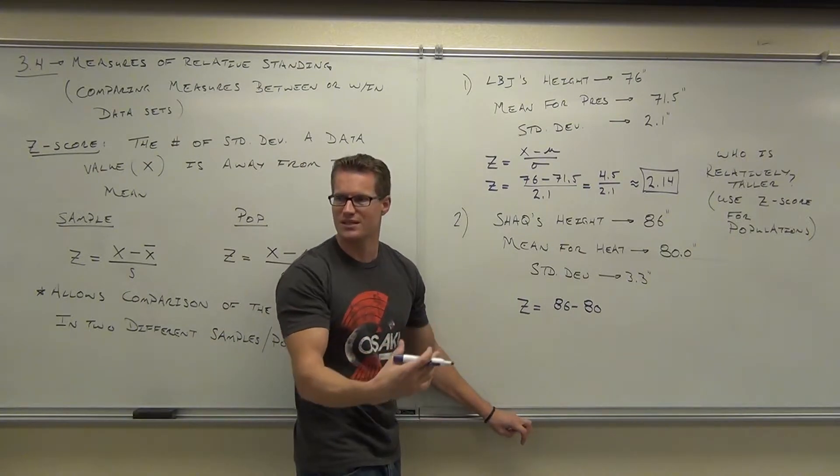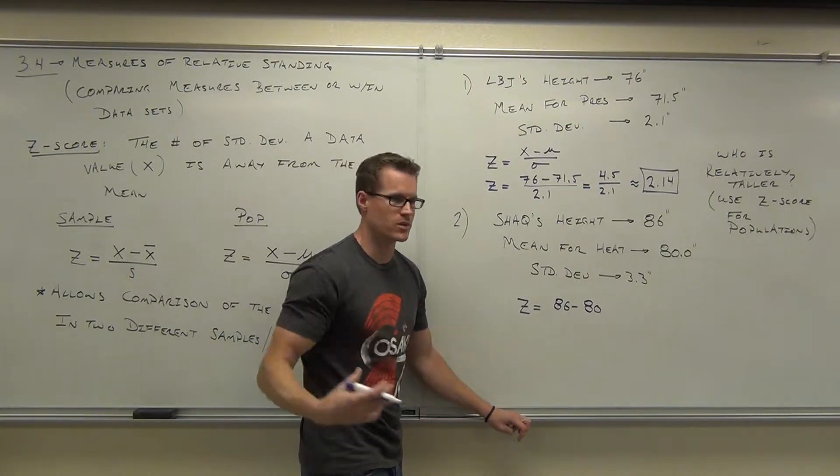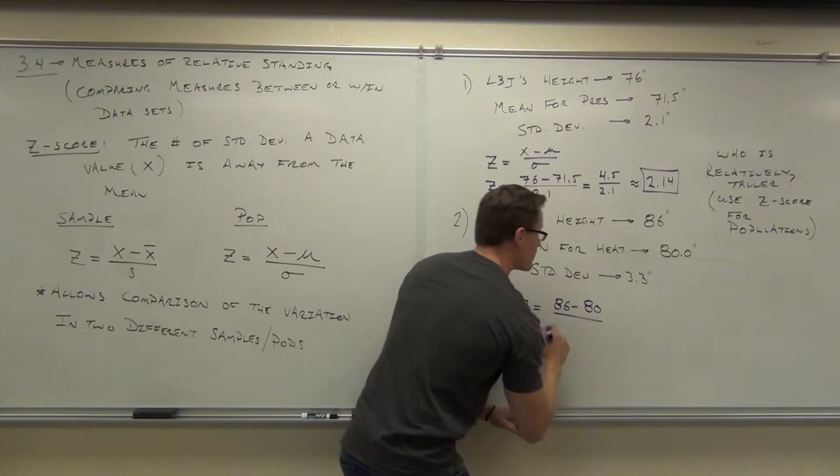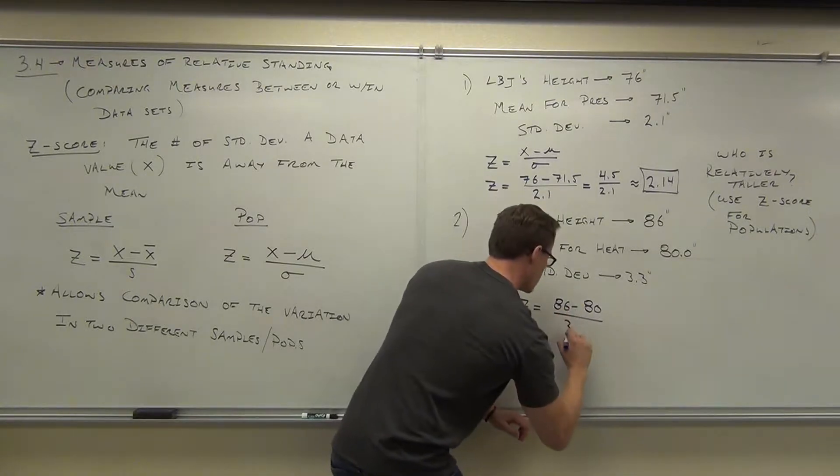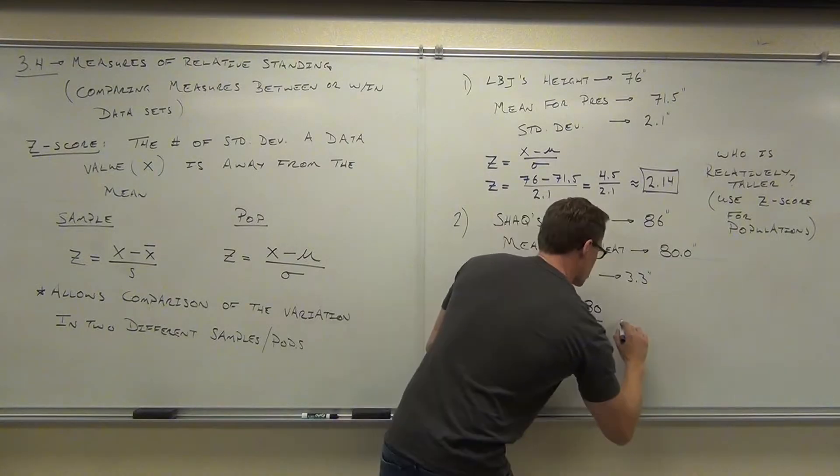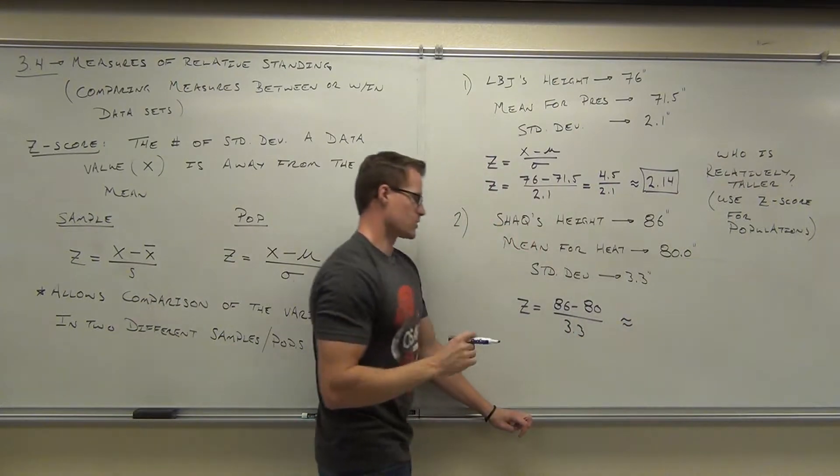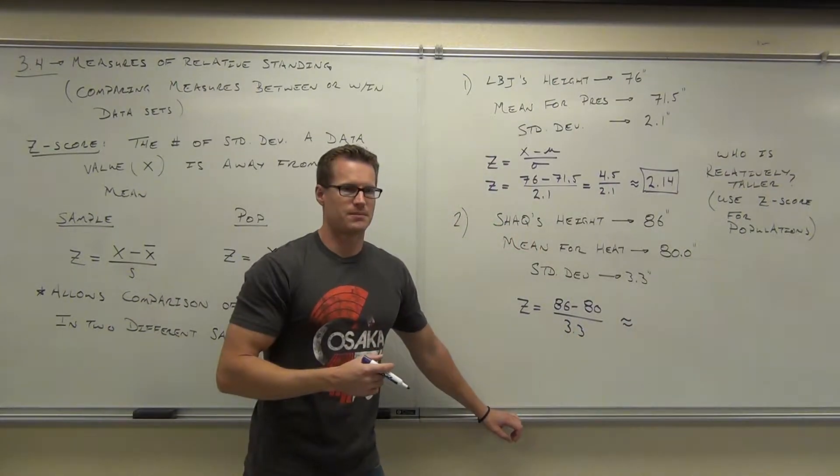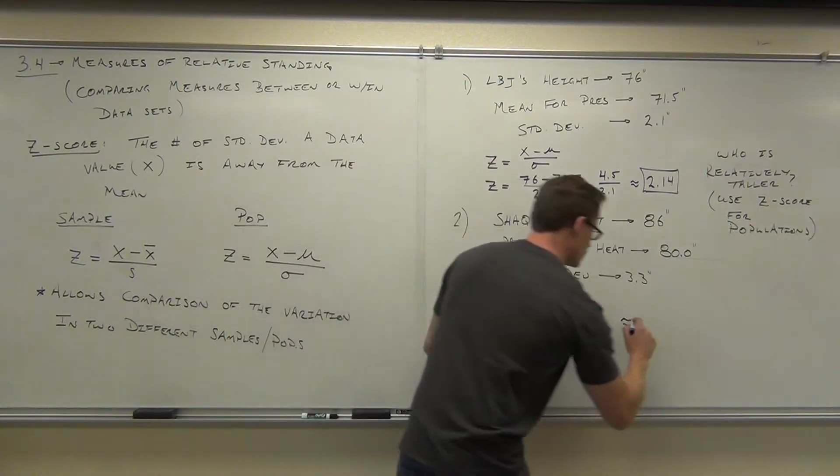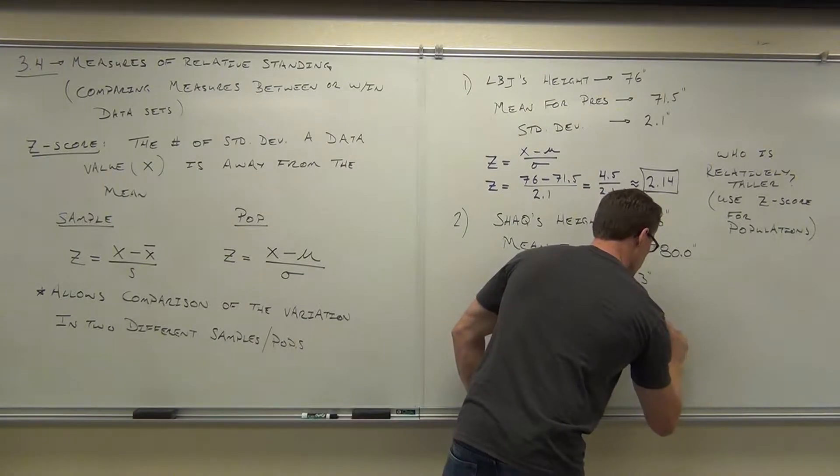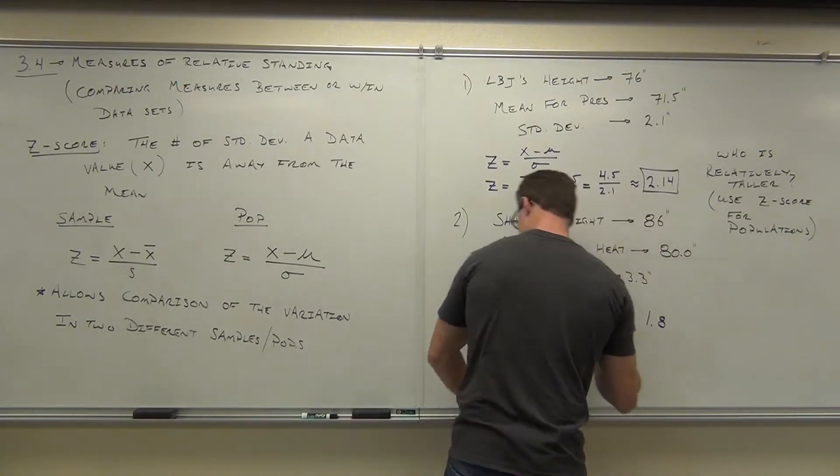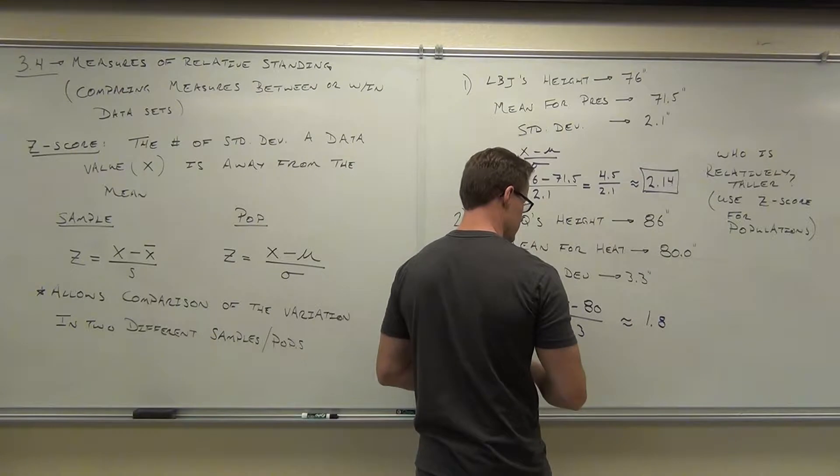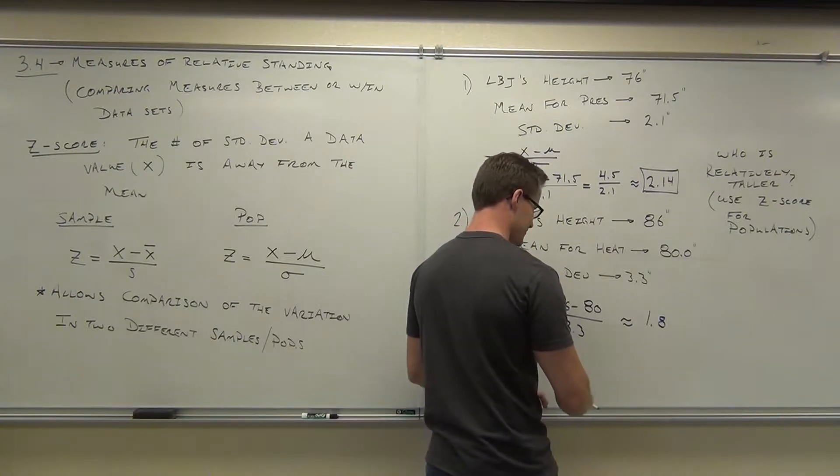So we have to use the appropriate data because you're talking about a different population now. So we have completely different values. Because again, you're basing it back on his relative group. That's why these are measures of relative standing, how he relates to his own group. So our Z score here is, well, six divided by 3.3, what is that?